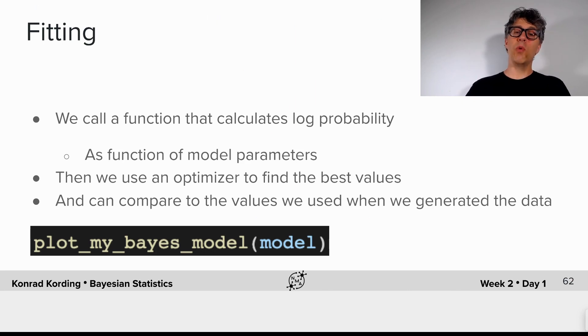Now, normally what we would do at this point, we would fit. We call a function that calculates the log of the probability as the function of the model parameters. Then we use an optimizer to find the best values, and then we can compare to the values that we generated.